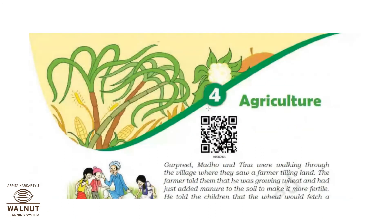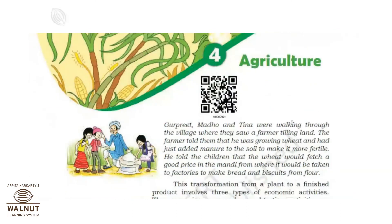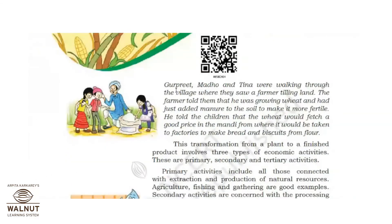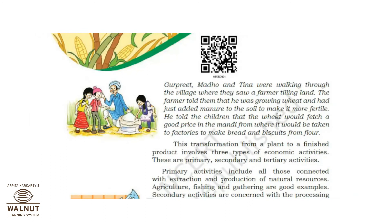This is lesson number four — Agriculture — from the standard eight textbook of geography. Now let's read the first paragraph. In the example, there are three persons: Gurpreet, Madho, and Tina. They were walking through a village where they saw a farmer tilling the land — preparing the land for cultivation. The farmer told them he was growing wheat and had just added manure to the soil to make it more fertile.